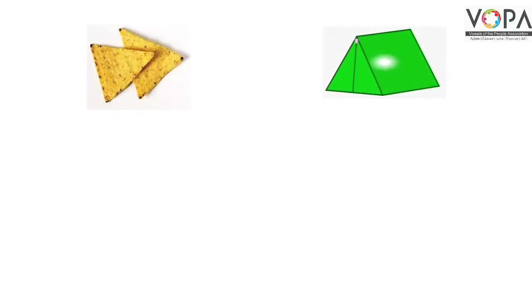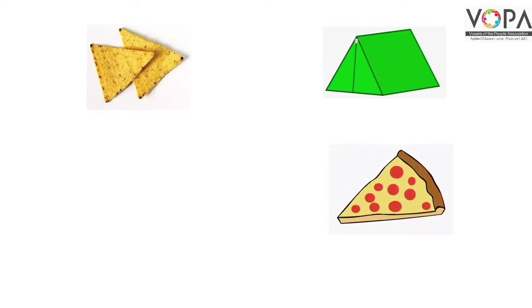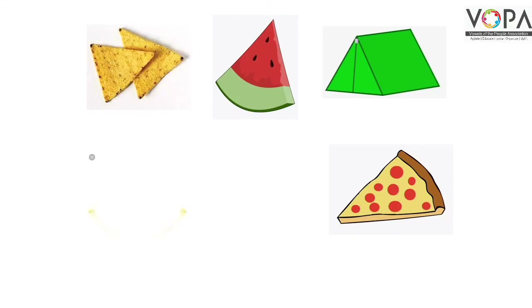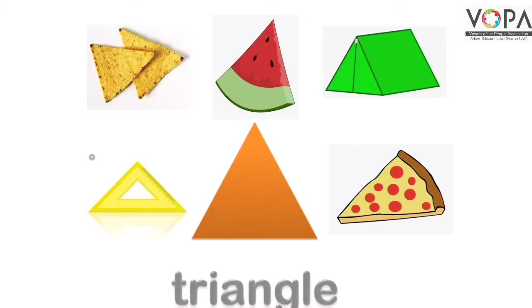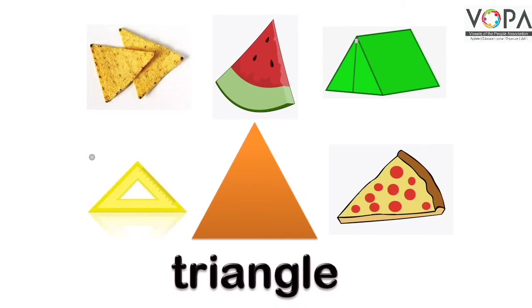अब इन चीज़ों का मुशाहदा कीजिए कि ये चीजें किस shapes की हैं? किन शकलों की हैं? बच्चों, ये तमाम शकलें triangle की तरह हैं। कैसी हैं? Triangle की तरह। तो ये सारी shapes कैसी हो गईं? Triangle।